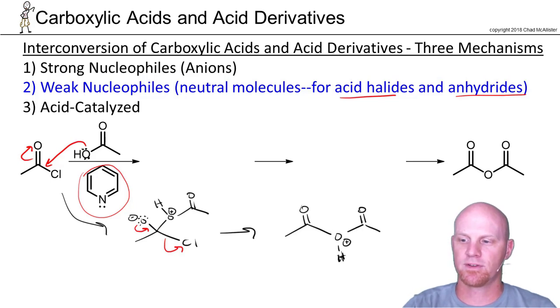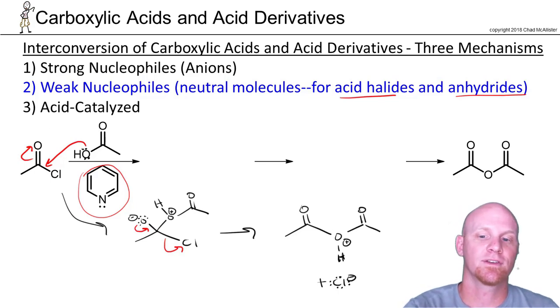And notice that oxygen still has a positive formal charge. So we're going to have to deprotonate him. We also formed a chloride ion here. So and in this case, normally we think chloride ion is going to come deprotonate whatever the leaving group was, but chloride is not a good base being the conjugate base of a strong acid.